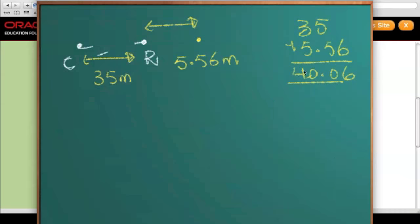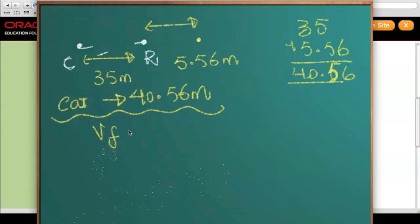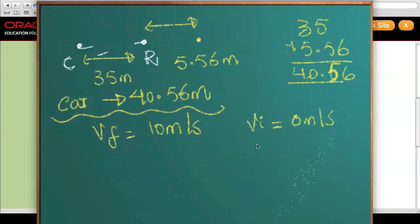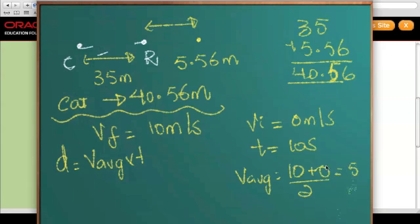That gives us 40.56 meters — sorry, use your calculator here. So the cat should have covered a distance of 40.56 meters. However, we just saw that the final speed of the cat was 10 meters per second and the initial speed was 0 meters per second, and the time is 10 seconds. Can we find the distance? Yes, we can — using the formula d equals v-average times time. So let's find the average velocity: (10 plus 0) divided by 2, which gives us 5.